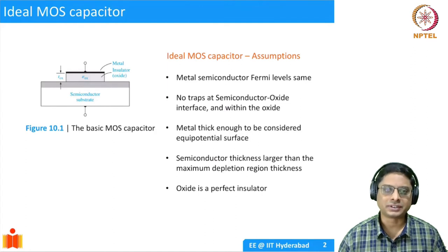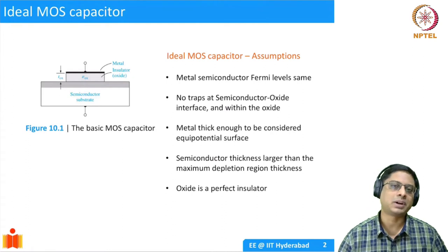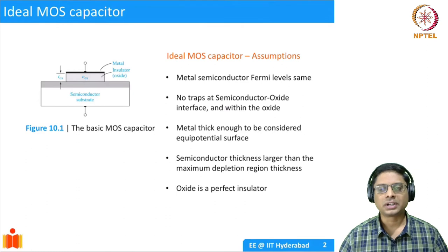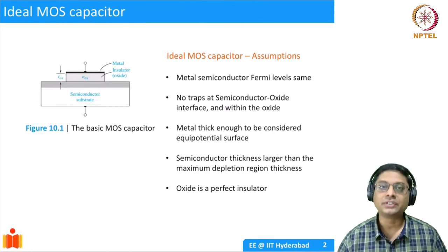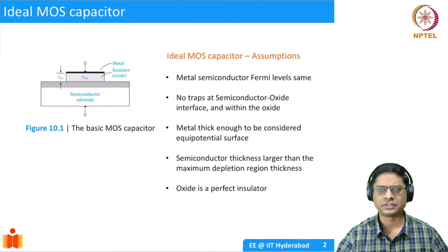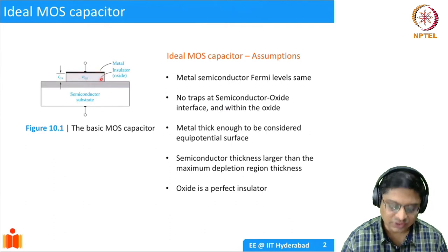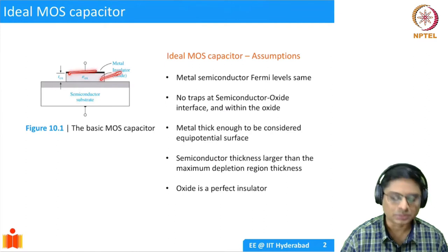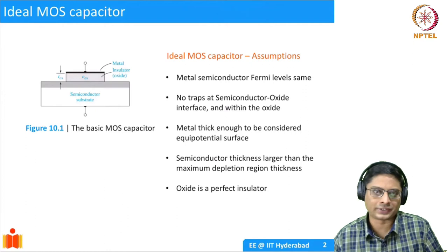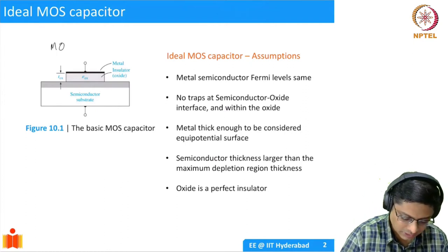A MOS capacitor is simply a structure consisting of three parts. So far we have looked at only P and N, or metal and semiconductor. Now we are introducing one more element in between, which is an insulator. A MOS capacitor consists of a semiconductor substrate, a thin layer of oxide which is an insulator, and then a metal on top. MOS stands for Metal Oxide Semiconductor.